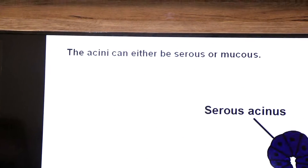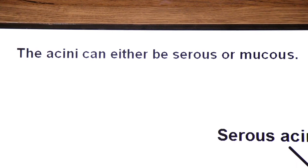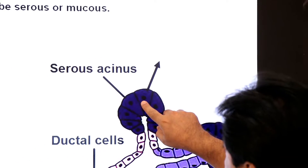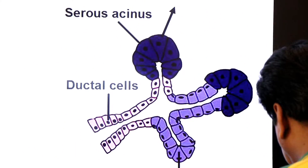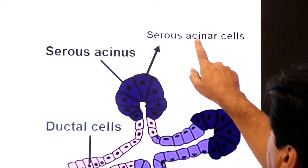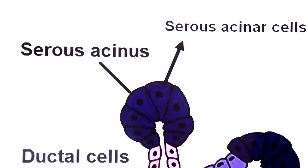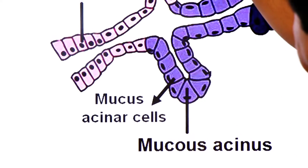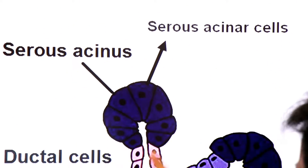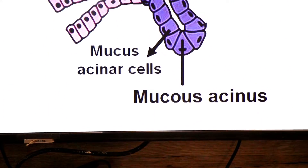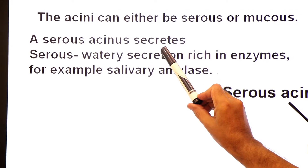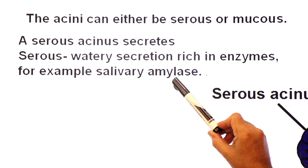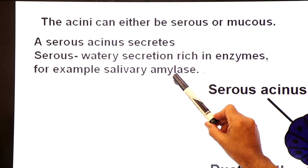The acinai can either be serous or mucous depending on which type of secretion they produce. A serous acinus is made up of serous acinar cells. A serous acinus secretes serous fluid — a watery secretion rich in enzymes. For example, it contains the enzyme salivary amylase, which starts breaking starch into maltose.